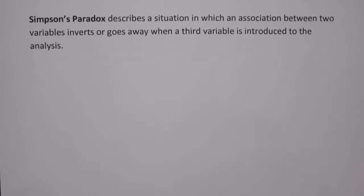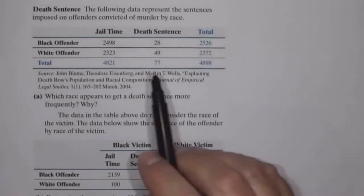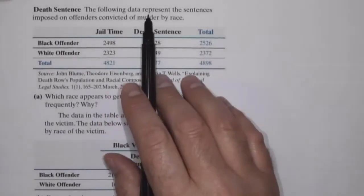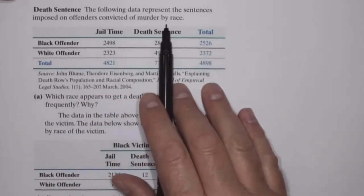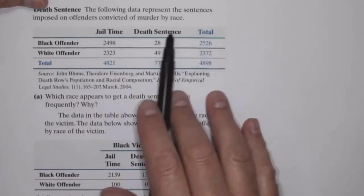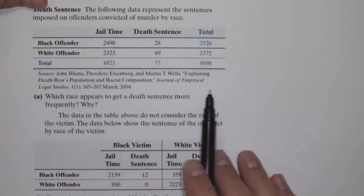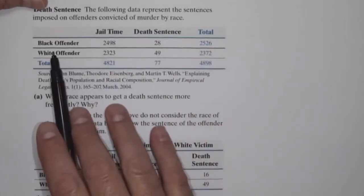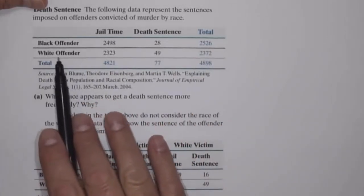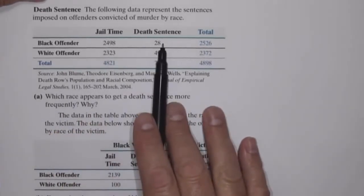So let's take a look at an example of this. The following data represent the sentences imposed on offenders convicted of murder by race. We can take a look at this data — what this data is showing us is that we have black offenders and white offenders convicted of murder, and these are the sentences.